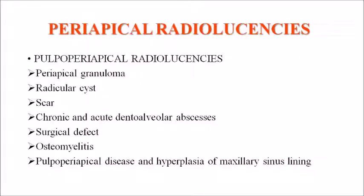Coming to periapical radiolucencies: pulpo-periapical radiolucencies include periapical granuloma, periapical cyst, or a periapical scar from a healing endodontic lesion. In case of chronic and acute dento-alveolar abscesses, they can also be due to surgical defects, osteomyelitis, pulpo-periapical disease, hyperplasia of the maxillary sinus lining, dentigerous cyst, periapical cemento-osseous dysplasia, periodontal disease, traumatic bone cyst, non-radicular cyst, or malignant tumor.